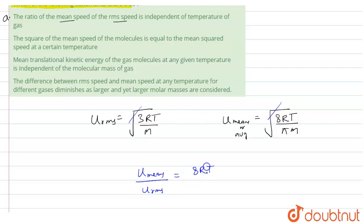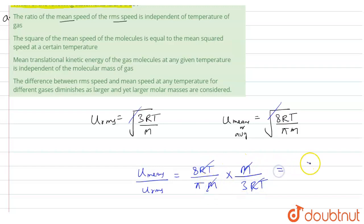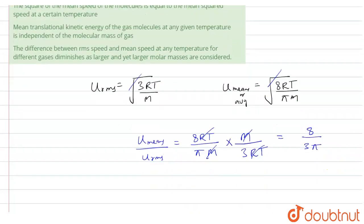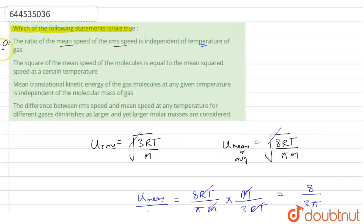√(8RT/πM) divided by √(3RT/M), so RT cancels with RT and M cancels with M, giving us √(8/3π). There is no term of temperature, so this ratio is independent of temperature. Therefore, Statement A is correct.